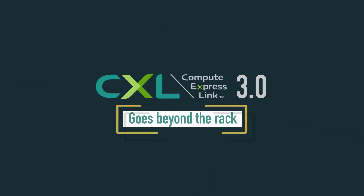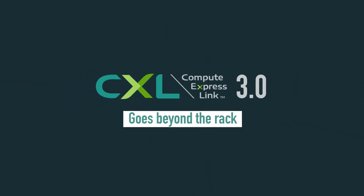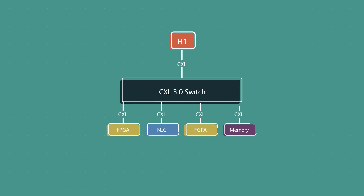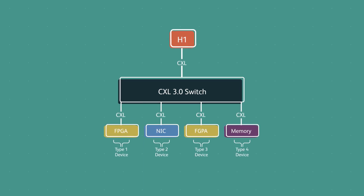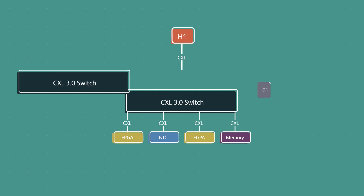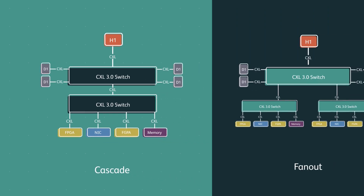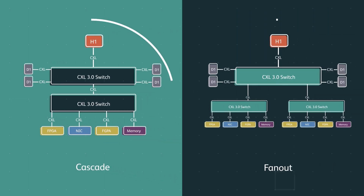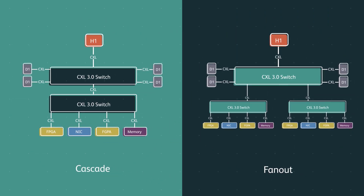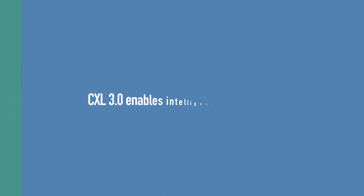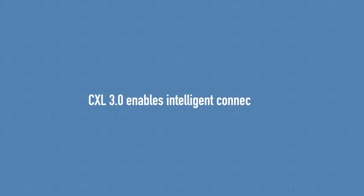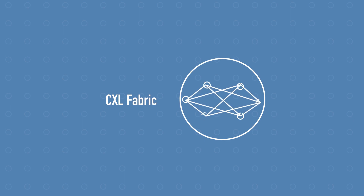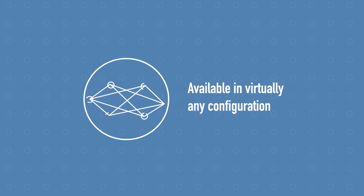CXL 3.0 goes beyond the rack and supports dynamic capacity devices, enabling multiple device types to connect to hosts through a port. It also supports multiple switch levels through cascade or fanout to create accessibility to a vast array of switch topologies. CXL 3.0 enables intelligent connectivity in the form of a CXL fabric, available in virtually any configuration needed for a system.